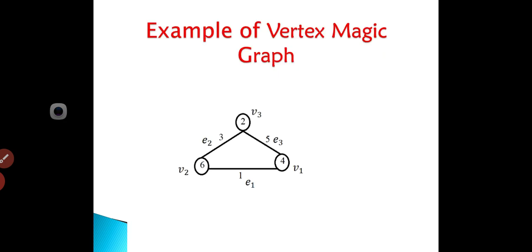Now we see an example of a vertex magic graph. Here is a graph with 3 vertices and 3 edges. The vertices are V1, V2, V3 and the edges are E1, E2, E3. The vertices are labeled with 4, 6, and 2. The edges are labeled with 1, 3, and 5. Now we see the condition for vertex magic graph.